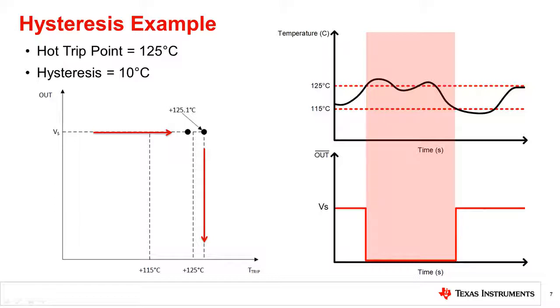So a system designer must ensure that the trip point selected must have sufficient guard band to account for errors in sensing the temperature.